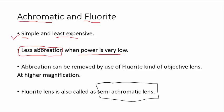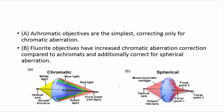This chromatic aberration can be avoided using achromatic or fluorite glass lenses. The fluorite lens is also called a semi-achromatic lens. The key characteristics of the achromatic lens are: it is simple, least expensive, has very low aberration, and aberration is especially low when the power is low. The fluorite objective lens is also called a semi-achromatic lens, and both types can remove chromatic aberration — unlike normal glass where different colors are observed, with these lenses chromatic aberration is removed.